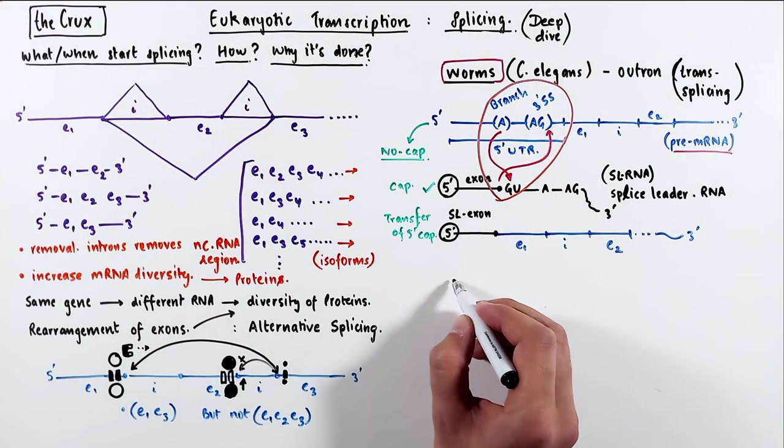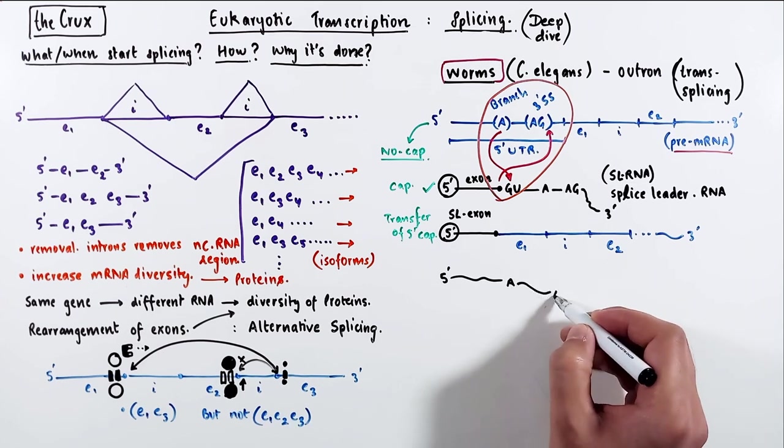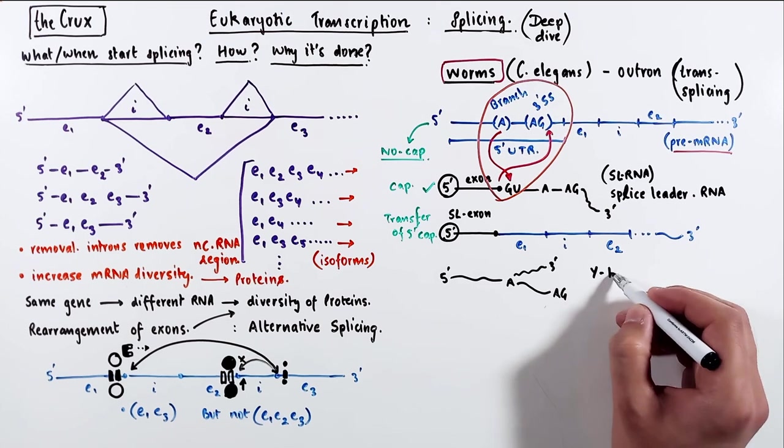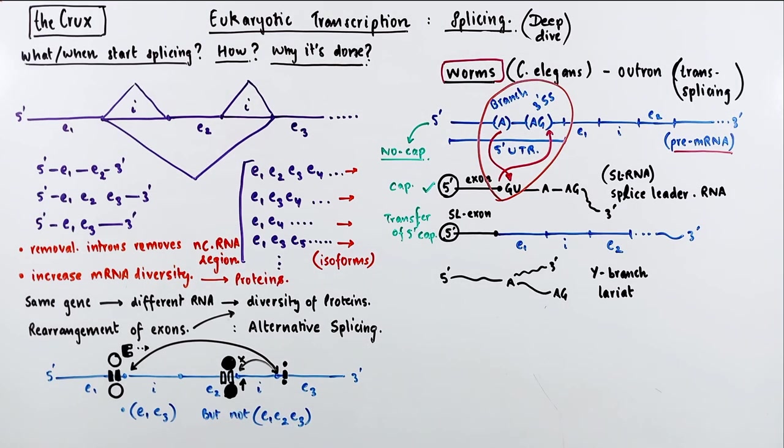and that UTR is called the outron. And it is attached to the intron of the slRNA. The outron removal results in this weird Y-branched lariat. This is in contrast to the intron lariat, which you get in the normal splicing. So outrons and introns are very different.